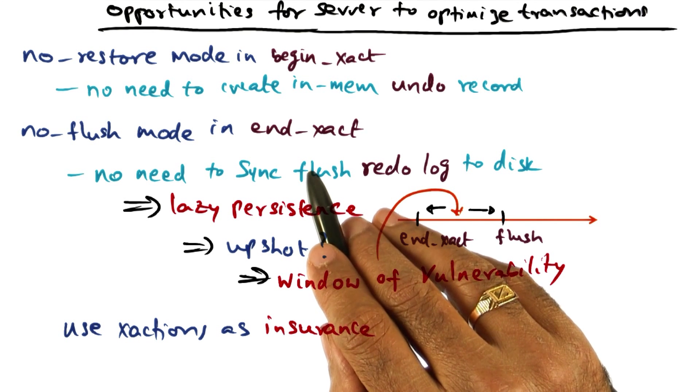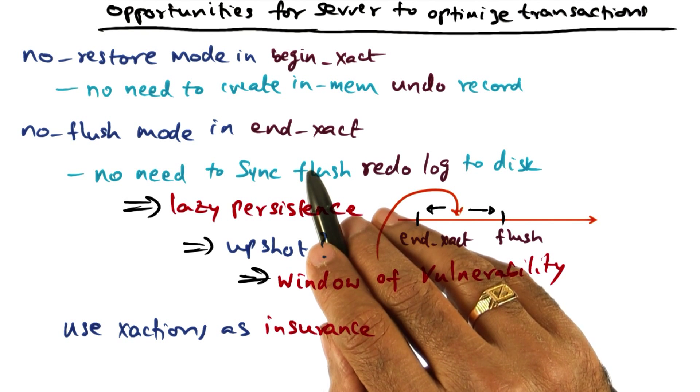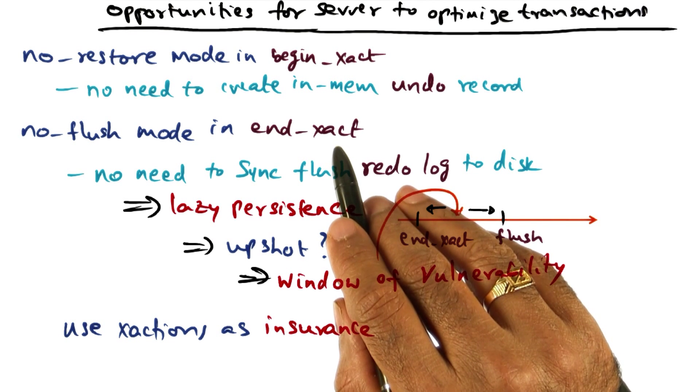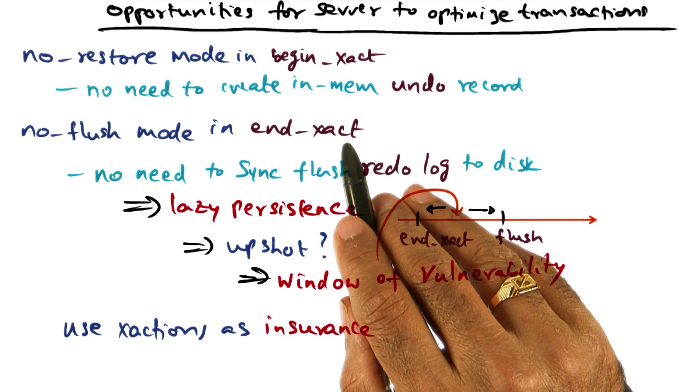So the normal semantic of an end transaction, that is a commit of a transaction, would require that RVM should block the process that made that call for end transaction until that redo record has been written synchronously to the disk.